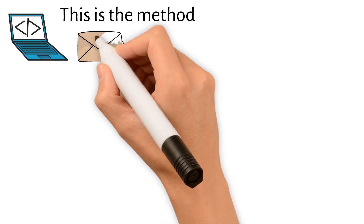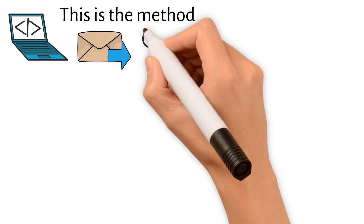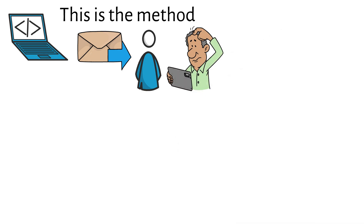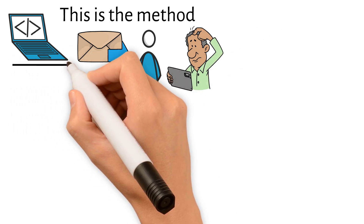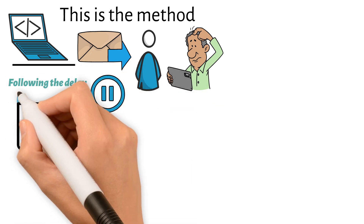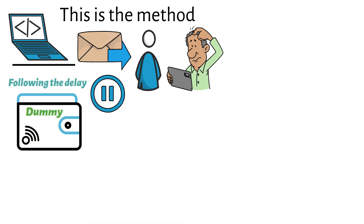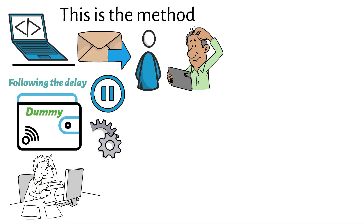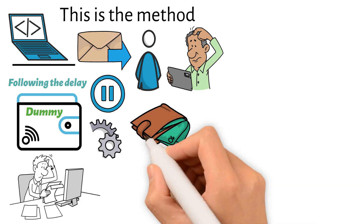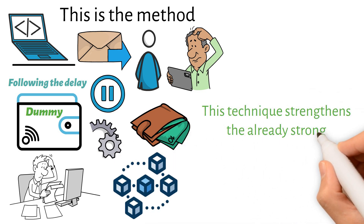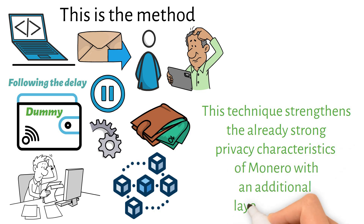A transaction is first sent to a small, arbitrary group of nodes when it is started by a user. The transaction is not instantly forwarded to the rest of the network by these nodes. Rather, they pause for an indeterminate period of time. Following the delay, the nodes broadcast the transaction in an anonymous manner, along with dummy transactions that they had generated. This makes it challenging to discern between legitimate and fraudulent transactions. The actual transaction eventually makes its way to other nodes, where it is confirmed and recorded to the blockchain. This technique strengthens the already strong privacy characteristics of Monero with an additional layer of security.